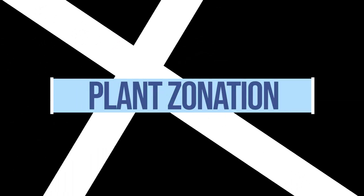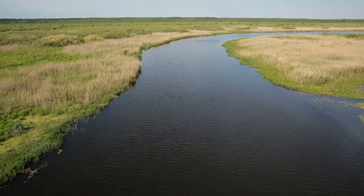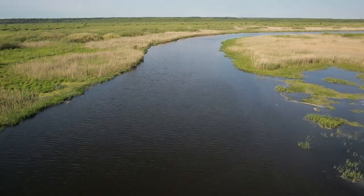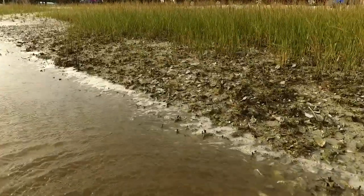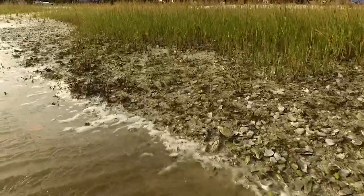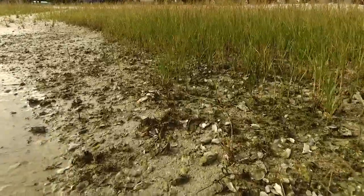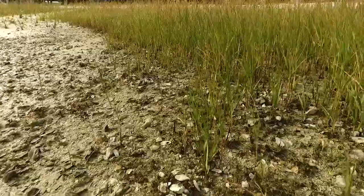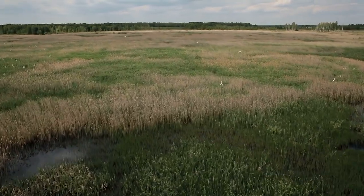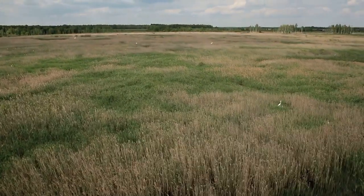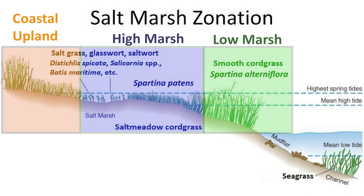Once you understand the elevations at your site, it's important to understand how the zonation maps onto those elevations. In Florida's coastal salt marshes, there is a very clear zonation of plant communities across the grade from low to high as you move inland from the sea. Elevation is one of the most important controlling factors for plant survival in salt marsh communities — if a salt marsh plant is planted too high or too low in elevation, it will not survive. There are three major elevation zones to consider: low marsh, high marsh, and coastal upland zones.